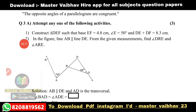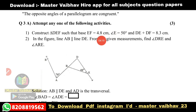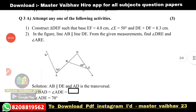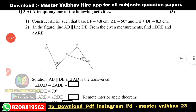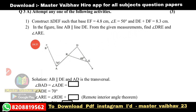Question 3A — attempt any one of the following activities. First: construct triangle DEF such that base EF is equal to 4.8 cm, angle E is equal to 50 degrees, and DE plus DF is equal to 8.3 cm. Second: in the figure, line AB is parallel to line DE — from the given measurements, find angle DRE and angle ARE.